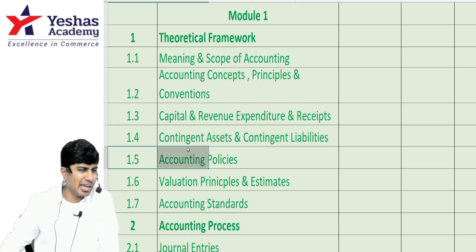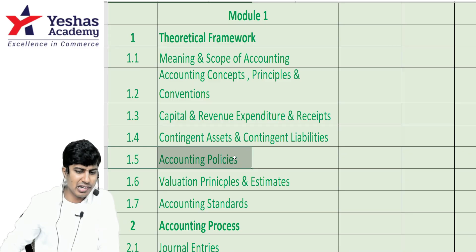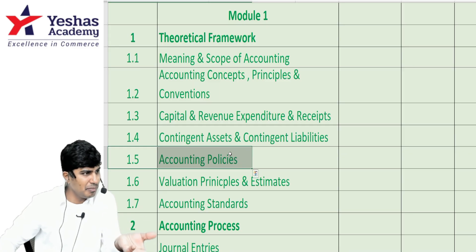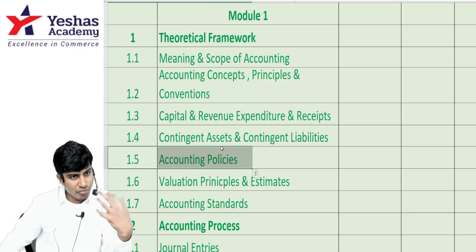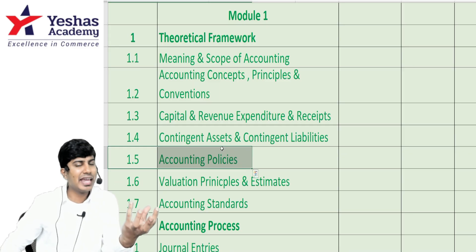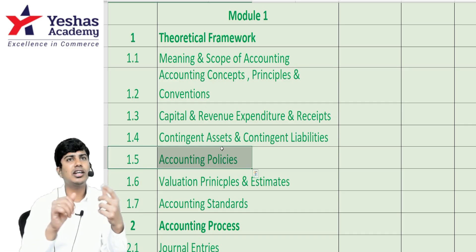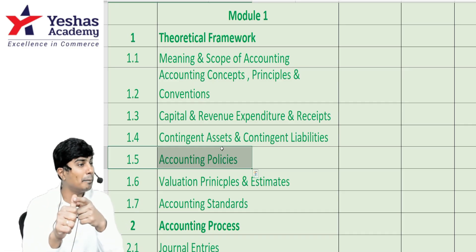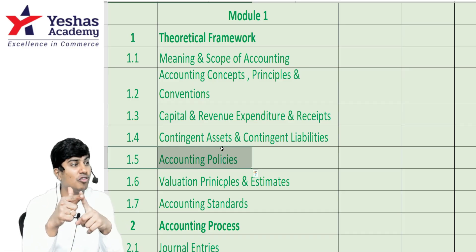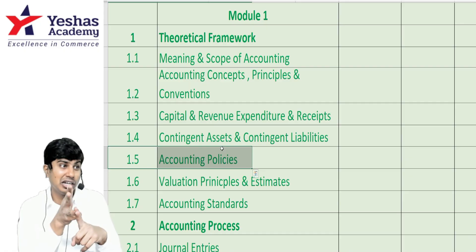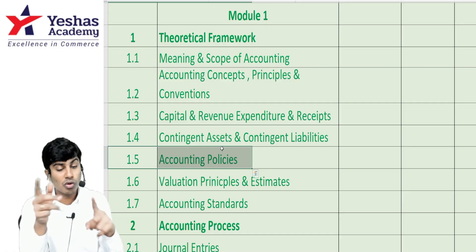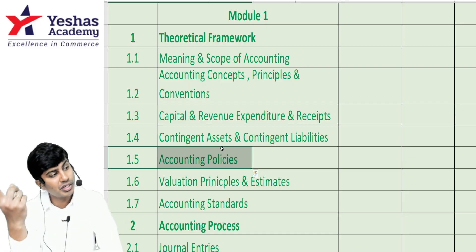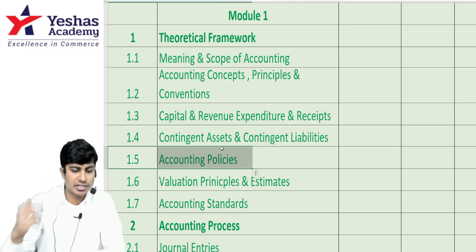Accounting policies can be taken much lightly — other than the definition, nothing else might come. But if they do ask, they can ask: what are the problems with accounting policies? No comparability, no uniformity, no standardization, difficulty in picking. What is the solution? Accounting standards.